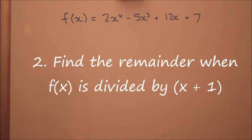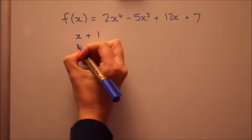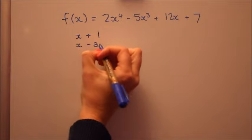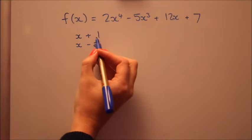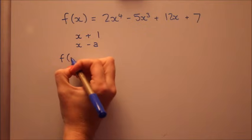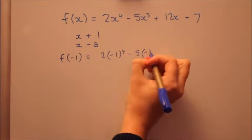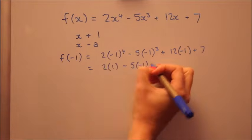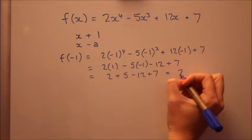So very similar to the first question. This time we're plugging in the number from the linear factor. Now the linear factor is x plus 1. Comparing that to x minus a, a will actually have to be minus 1. So you do have to remember to change the sign. So if you're dividing by x plus 1, you need to put x is minus 1 into the polynomial.